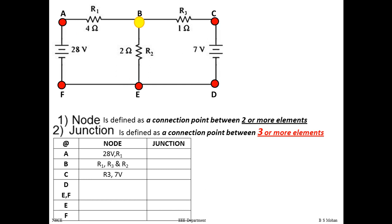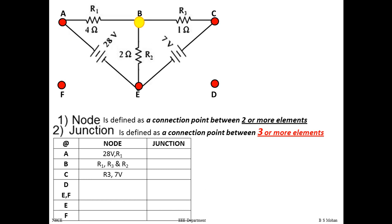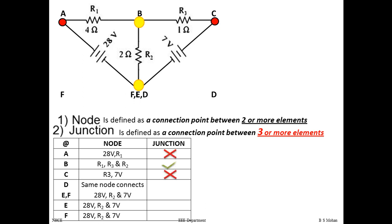Between F and D, and between E and D, there are connecting wires. In the redrawn diagram we have removed those connecting wires and connected each end of the 28V, 2Ω, and 7V directly. Thus F, E, and D, which were separate nodes, now all form one junction holistically. We have two junctions highlighted in yellow: B and D.